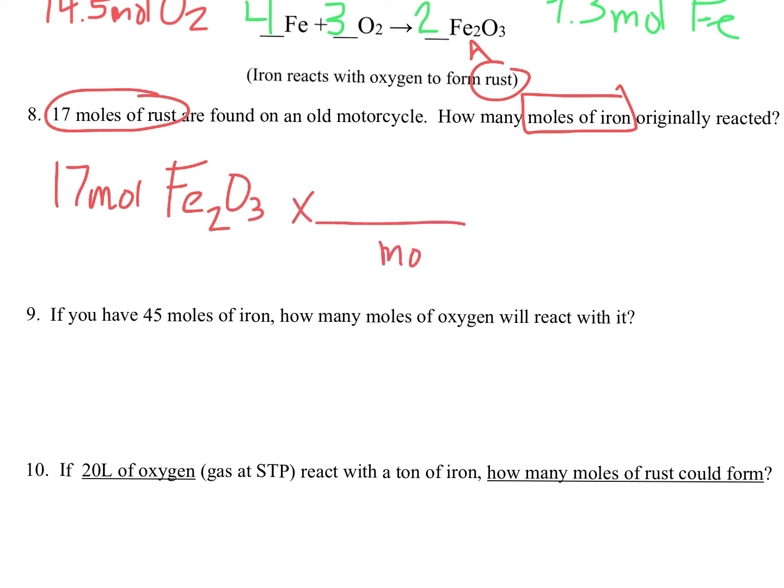I'm going to get rid of rust moles, so I'm going to have to put that on the bottom to cancel out. Up on top, it looks like I'm trying to solve for moles of iron. So that means in the numerator, moles of iron has to be there because that will end up in my answer. Now that I have that, I just have to look off my balanced equation.